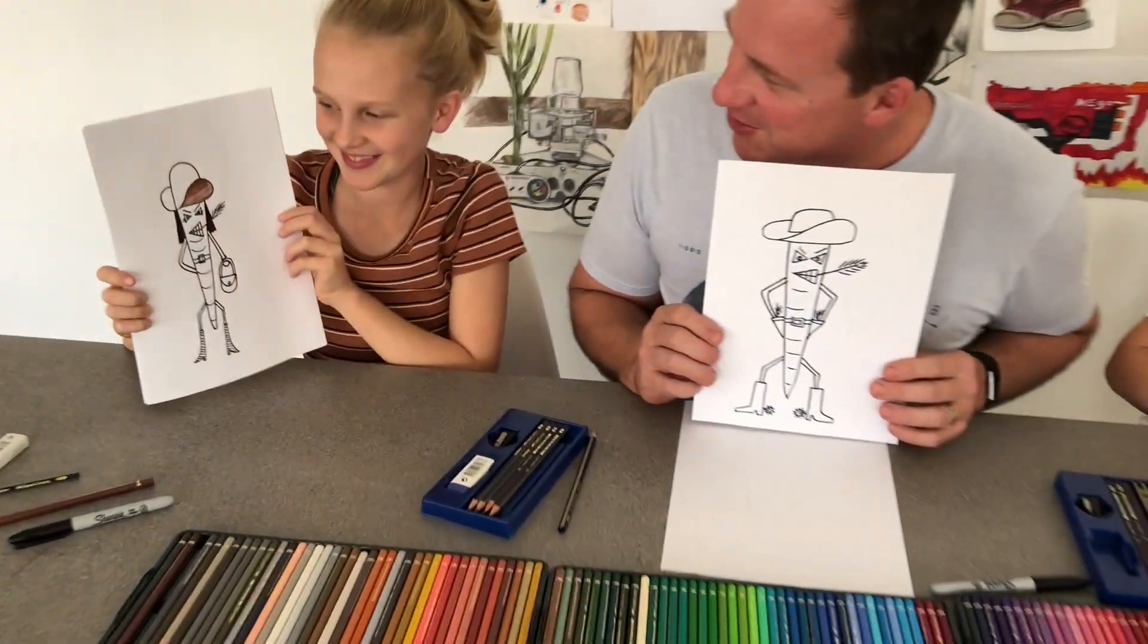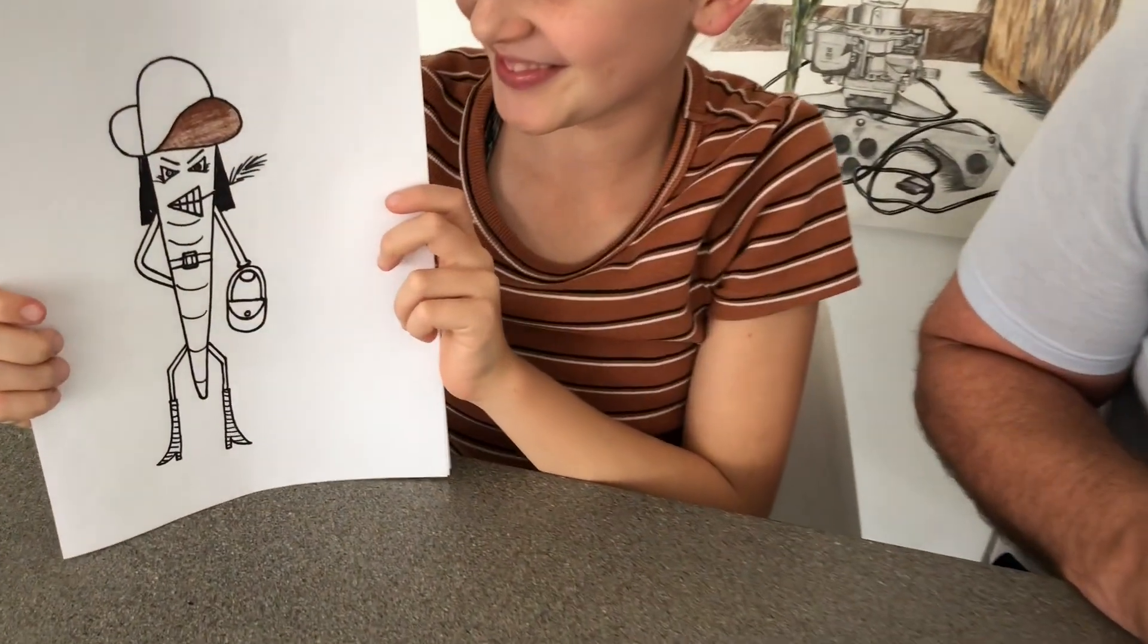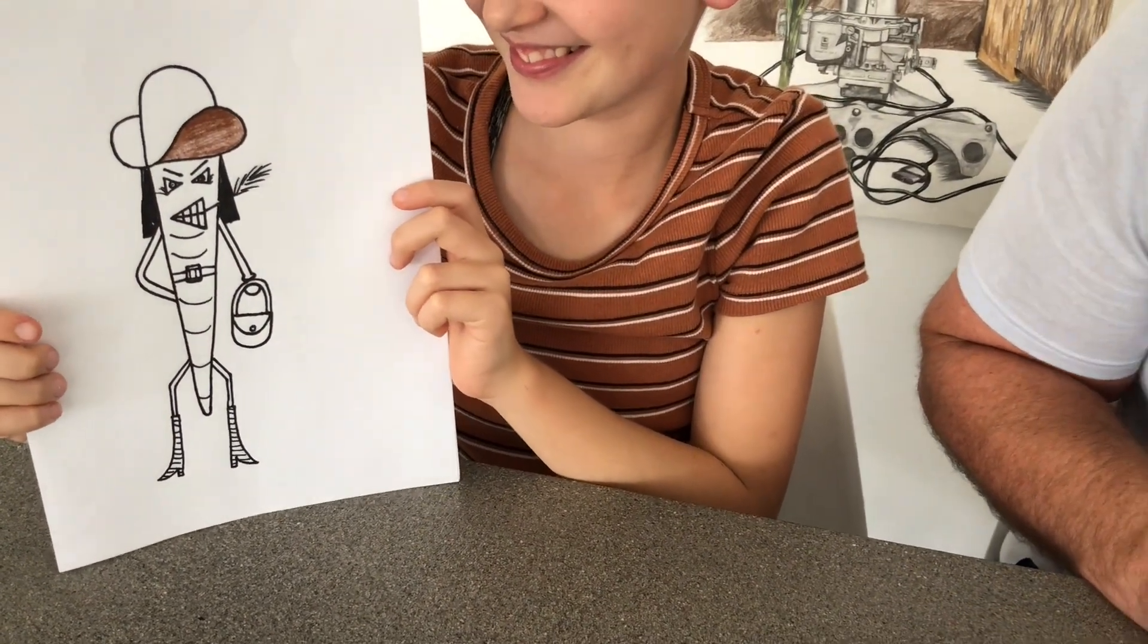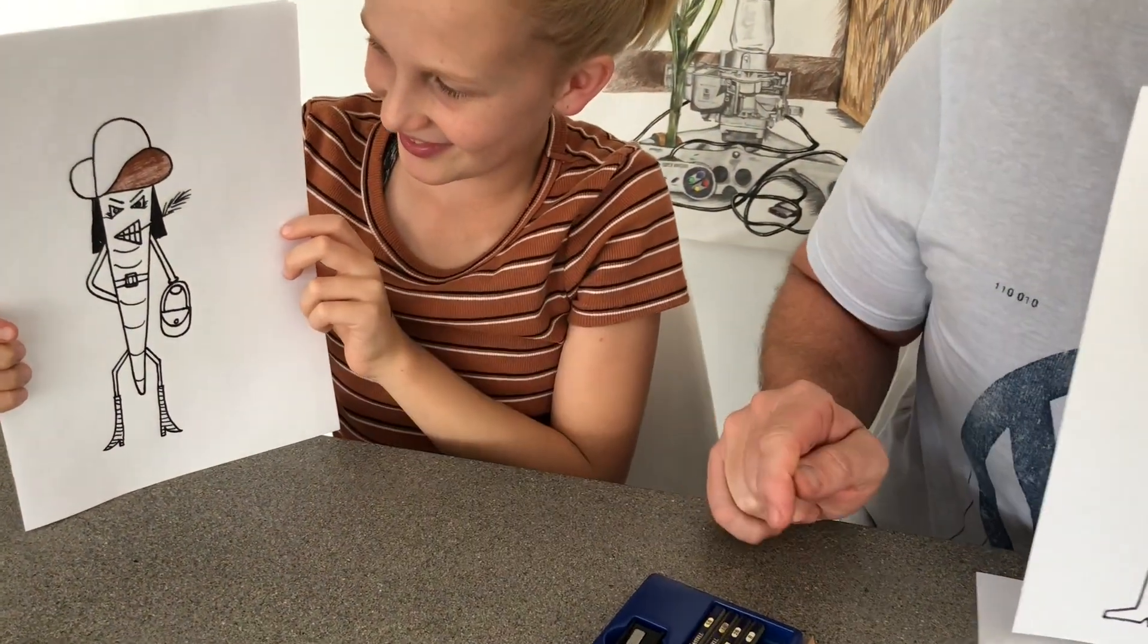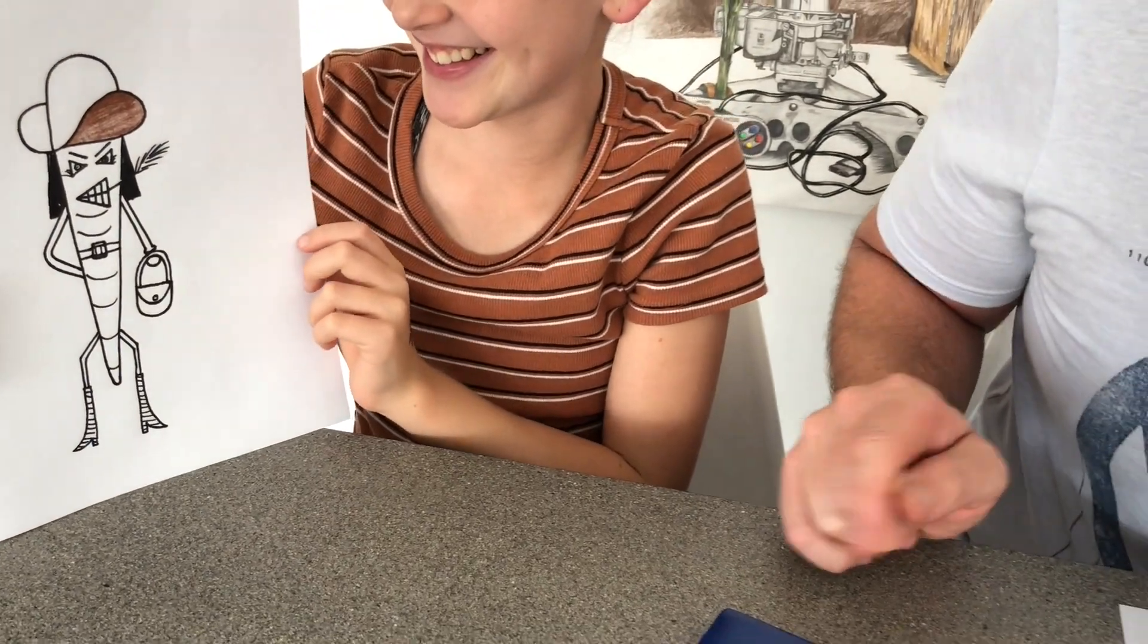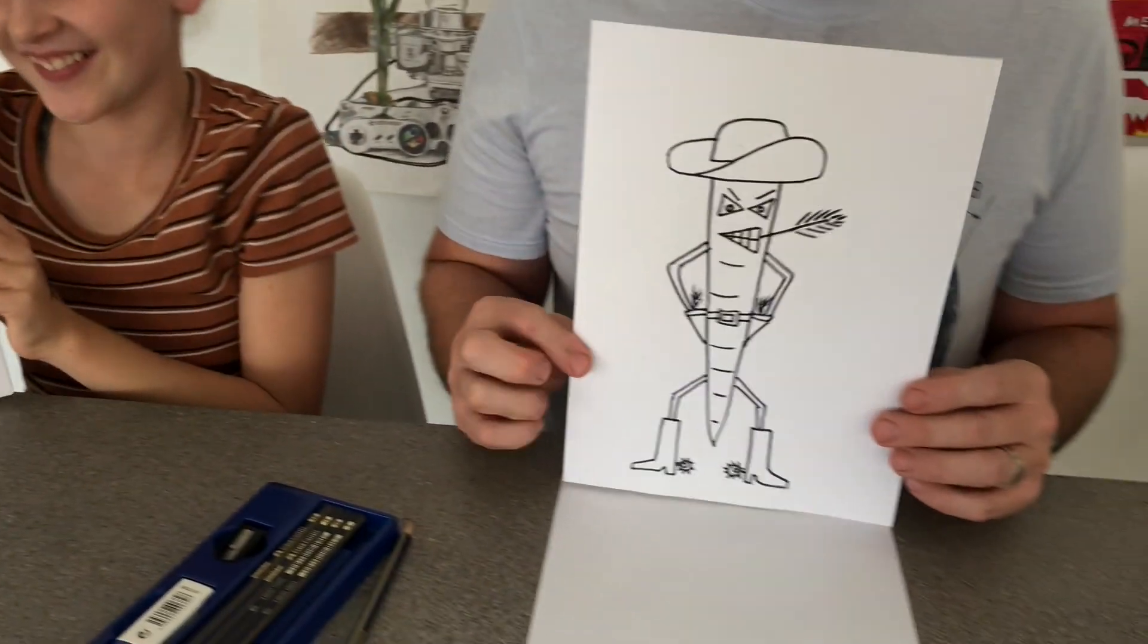Looks like you've made yours a nice little girl Cowboy carrot. I like your hair and your really nice stripes on your boots. And look at that cool handbag there. Awesome job. And a bit of long hair. Now it's time to colour in.